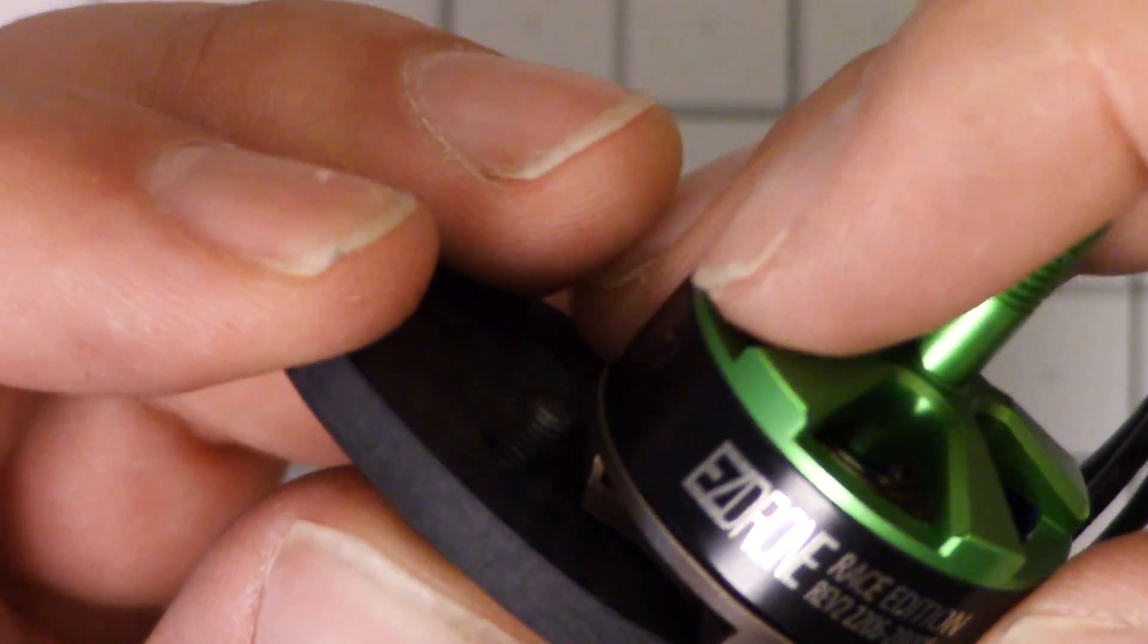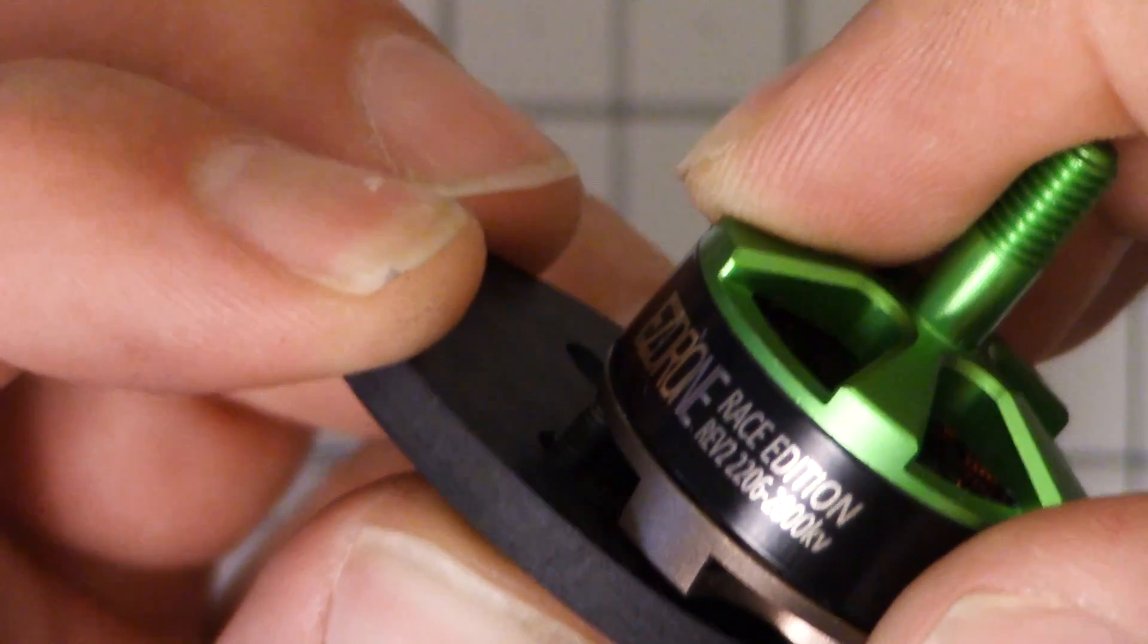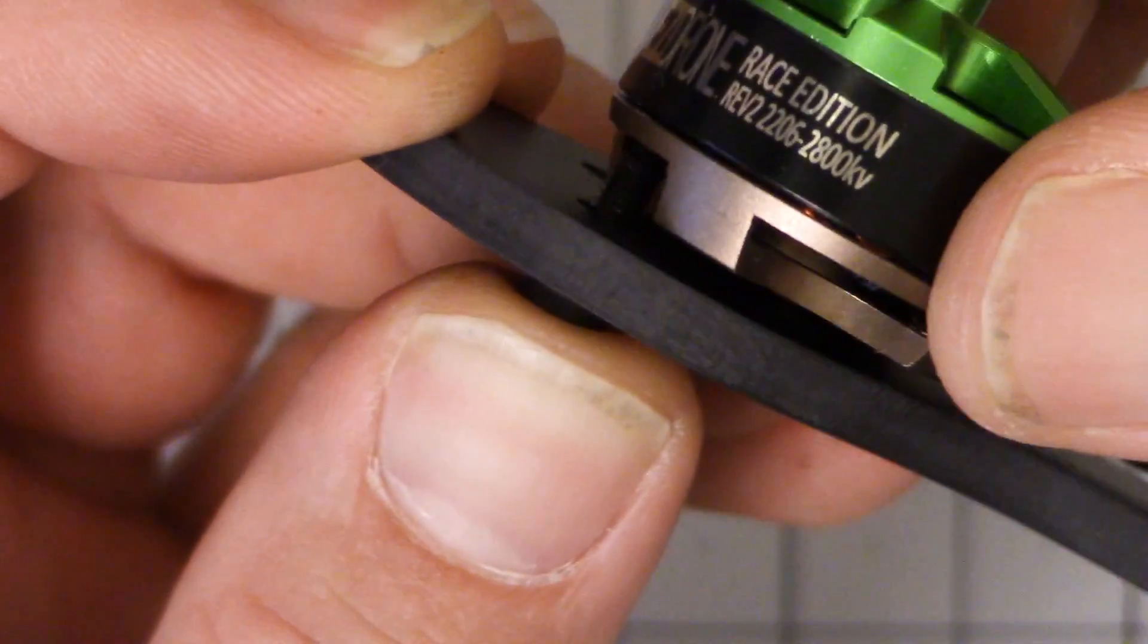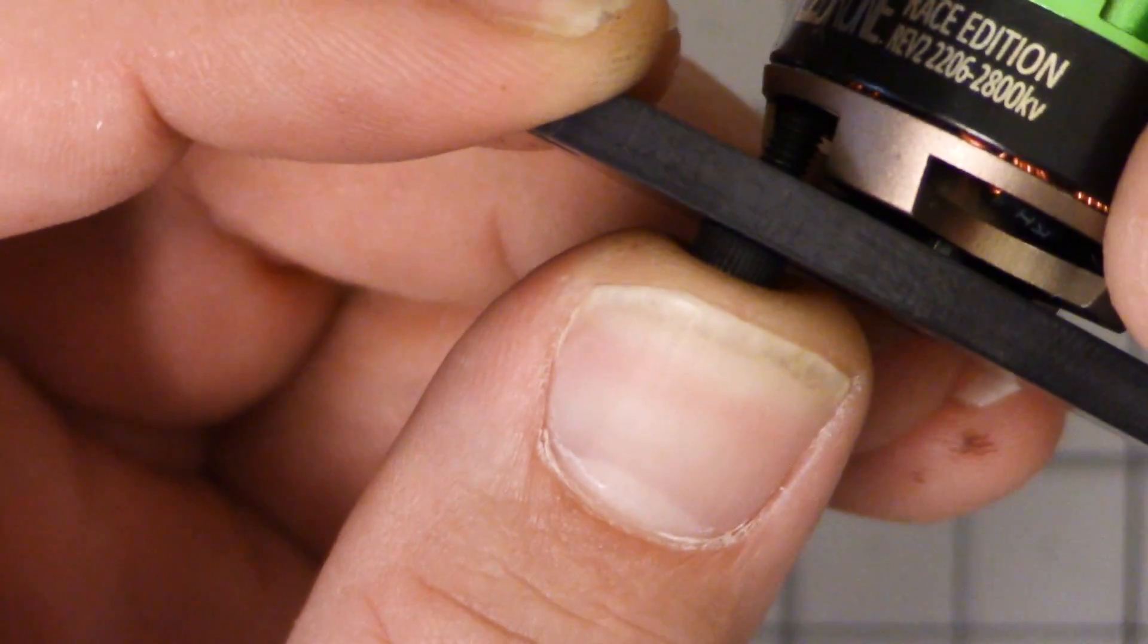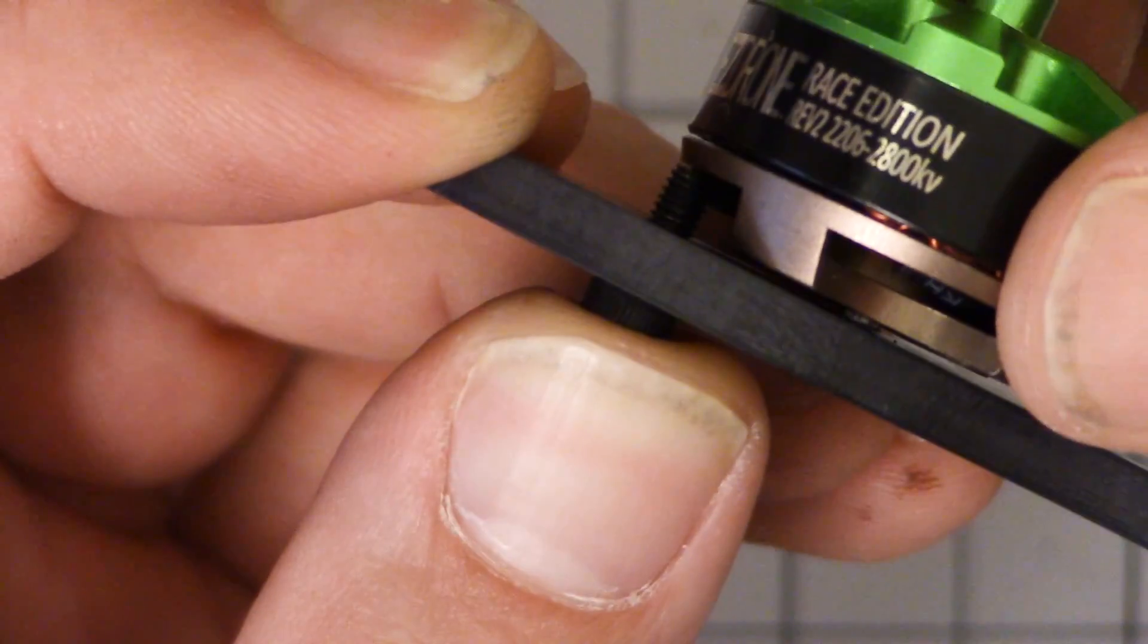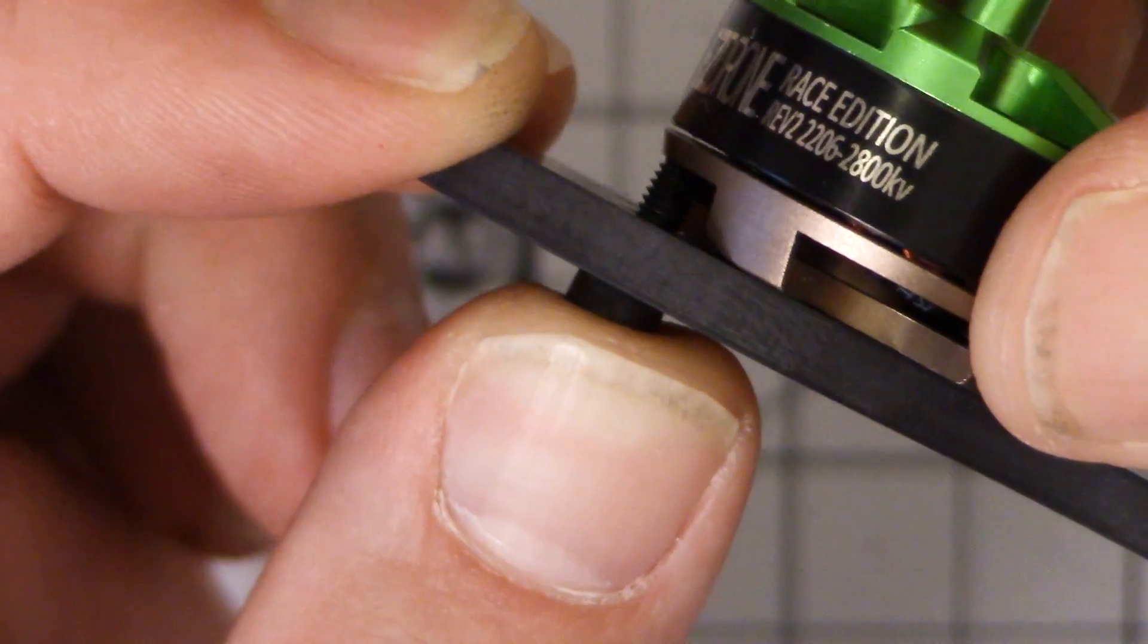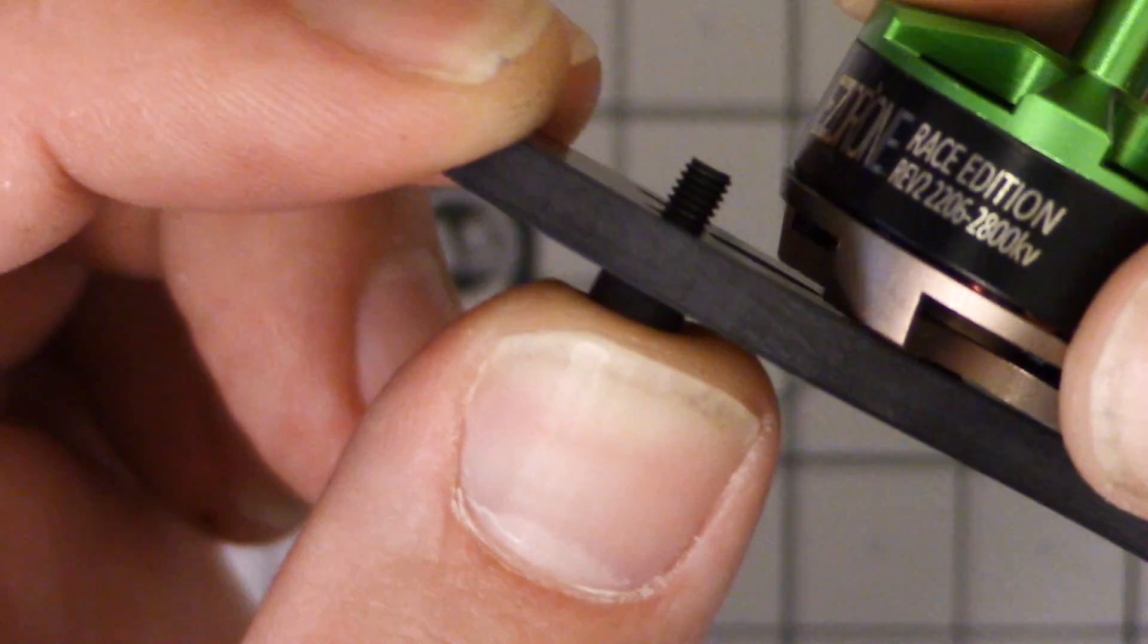So if I take this longer screw and I put it through and I just hold the motor here, you can see that it is just short enough that it will fit in here and it will not touch the windings, but it's getting awfully close. There's not a lot of clearance there.